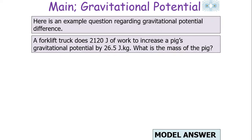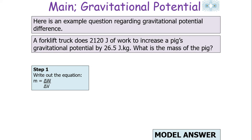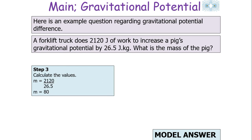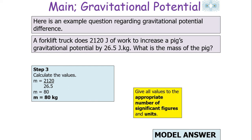Let's look at an example question: a forklift truck does 2,120 joules of work to increase a pig's gravitational potential by 26.5 joules per kilogram. What is the mass of the pig? Step one: write out the equation — m = W/ΔV. Step two: place the values in, calculate, and give the answer to the correct significant figures and units: 80 kilograms.